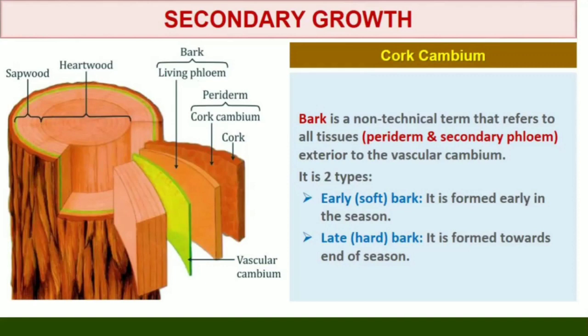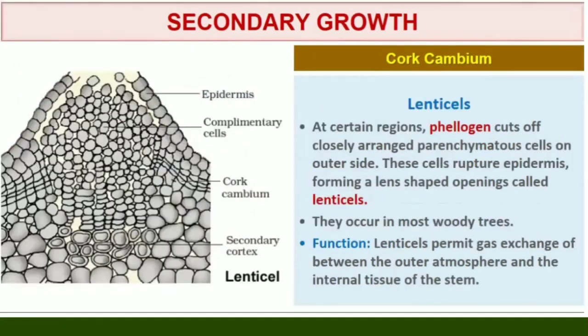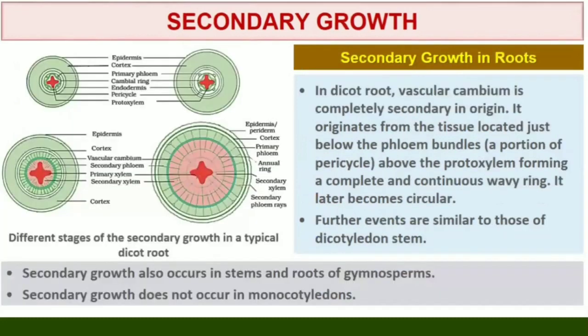At certain regions, the phellogen cuts off closely arranged parenchymatous cells on the outer side instead of cork cells. These parenchymatous cells soon rupture the epidermis, forming lens-shaped openings called lenticels. Lenticels permit the exchange of gases between the outer atmosphere and the internal tissues of the stem. These occur in most woody trees.